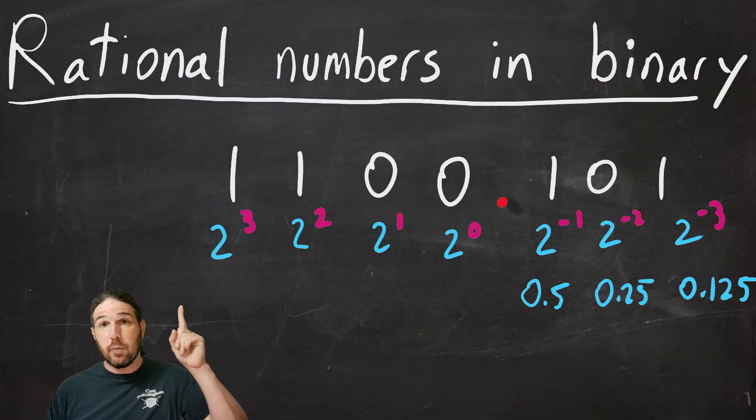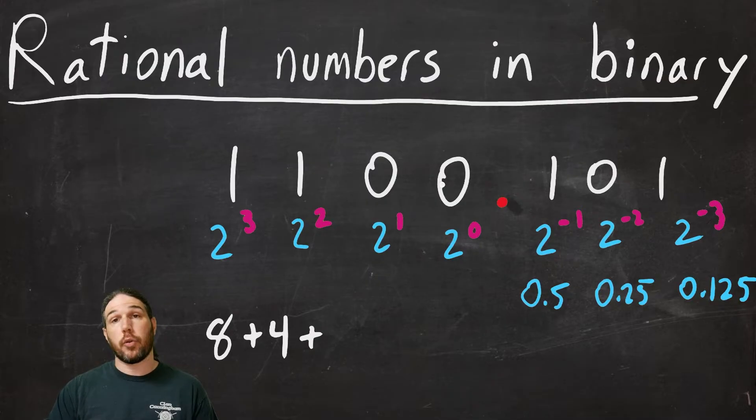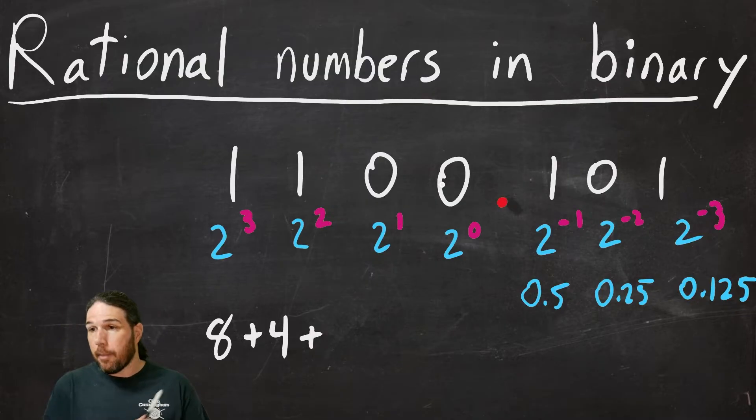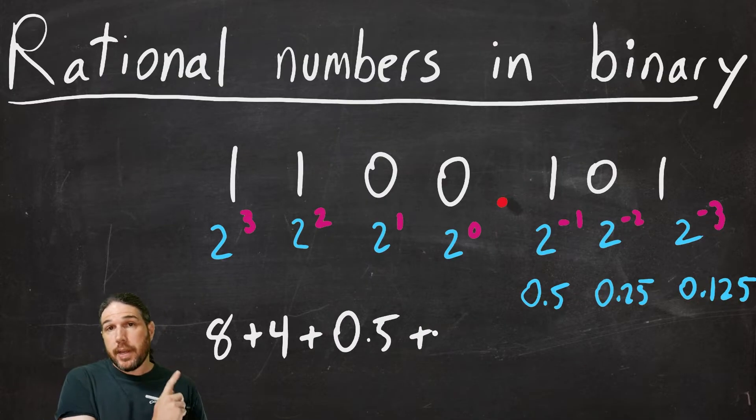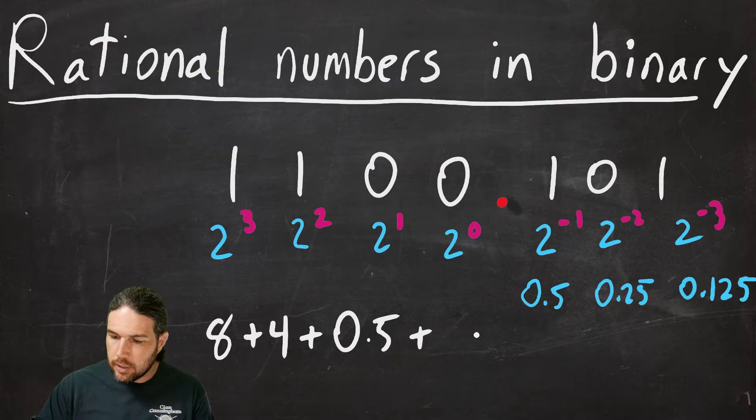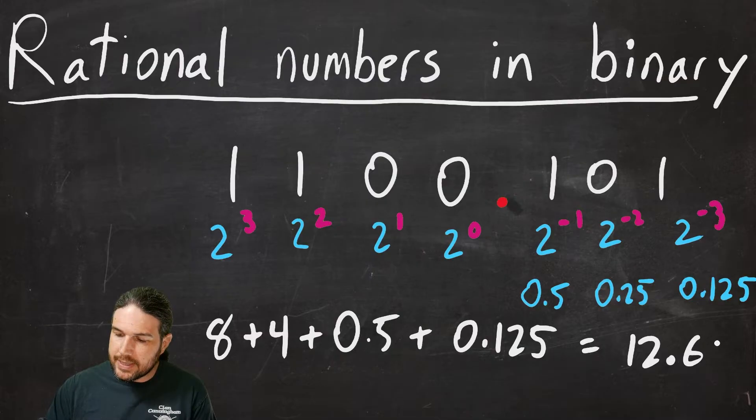We've got one two to the third, which is eight. We've got a two squared, which is four. We do not have a two to the first or a two to the zero. After the decimal point, we have that other one in the 0.5 space. There is nothing in the 0.25 space, but there is a one in the 0.125 space. In order to translate this into decimal, we just have to take all four of these and add them together. Eight and four is 12. 0.5 and 0.125 is 0.625. So our number in decimal is 12.625.